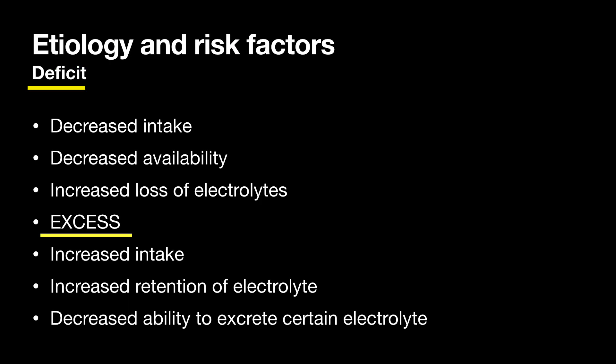The etiology and risk factors of electrolyte imbalances include: electrolyte deficit may be caused by decreased intake or decreased availability of electrolytes, or by increased loss — for example, loss of gastric juice through vomiting may lead to the loss of several electrolytes. Electrolyte excess can be caused by increased intake, increased retention, or decreased ability to excrete certain electrolytes — for example, ingestion of excess sodium bicarbonate for indigestion can alter both sodium levels and acid-base balance.